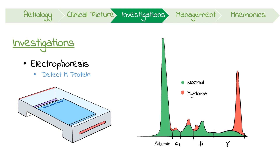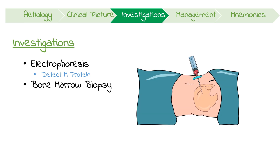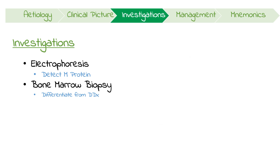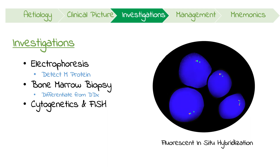It also helps us to understand why myeloma is often described as a gammopathy. Another important diagnostic test is a bone marrow biopsy, and this helps to distinguish myeloma from similar diseases like a solitary plasmacytoma. Like in many other malignancies, cytogenetics and fluorescent in-situ hybridization analysis are important to determine the exact chromosomal abnormalities that caused the cancer. Not only is this important for prognosis, but it also has therapeutic implications too.